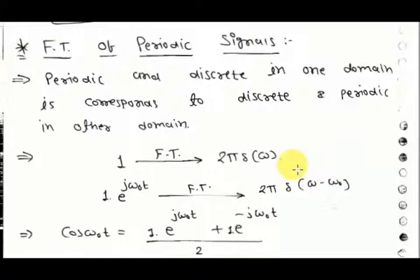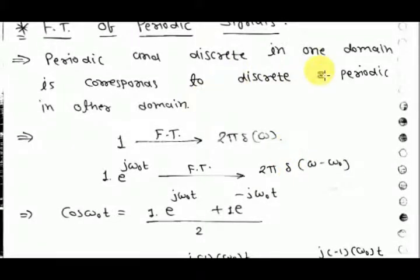Fourier transform of periodic signals: for a periodic signal, the transform used is the Fourier series, and for a non-periodic signal we use the Fourier transform. But for periodic signals, we can also calculate the Fourier transform — for example, we know the Fourier transforms of cos(omega_0 t) and sin(omega_0 t). An important duality property: a signal that is periodic and discrete in one domain corresponds to being discrete and periodic in the other domain. If a signal is periodic in one domain, it will be discrete in the other, and vice versa.